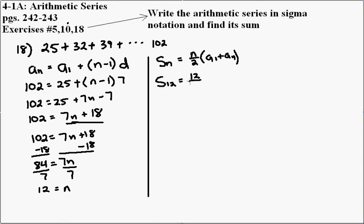The value of our first term is 25. The value of our nth term, or 12th term, is 102. Dividing 12 by 2, we get 6. Adding 25 and 102 together, we get 127. And then multiplying 6 times 127, our 12th partial sum is going to be equal to 762.